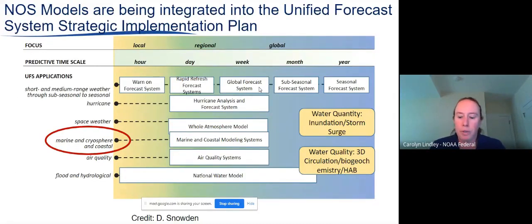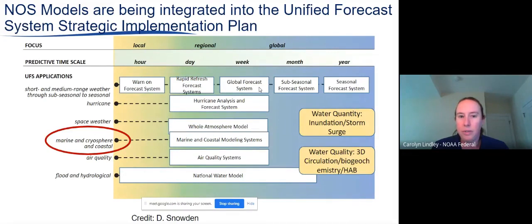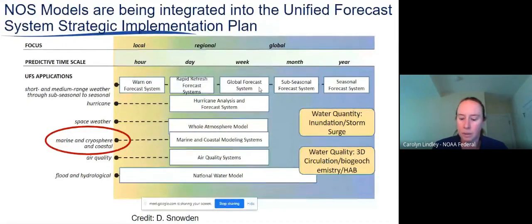The NOS program fits within the UFS under the marine priority area, addressing water quality and water quantity. Initial requirements are from the hour out to about five days. The marine transportation sector is interested in multi-week forecasts, so we need to extend forecasting capability. Longer range includes ecological forecasting with seasonal HAB forecasts, and at the climate scale, inundation projections are a major priority for ocean service.